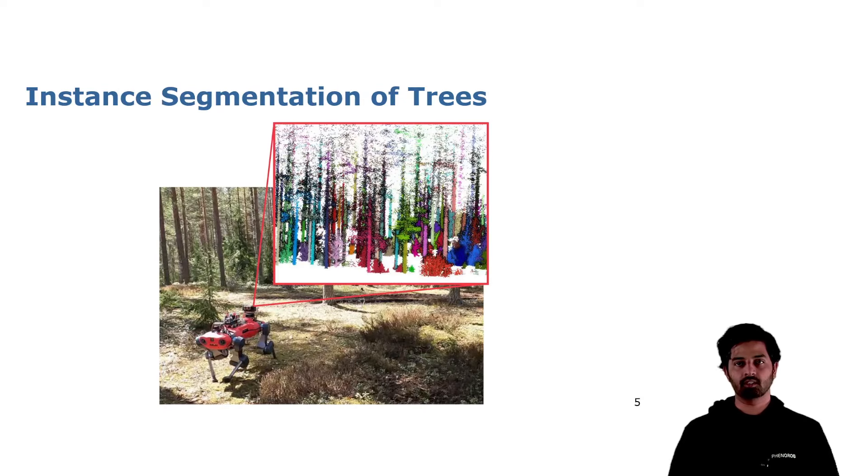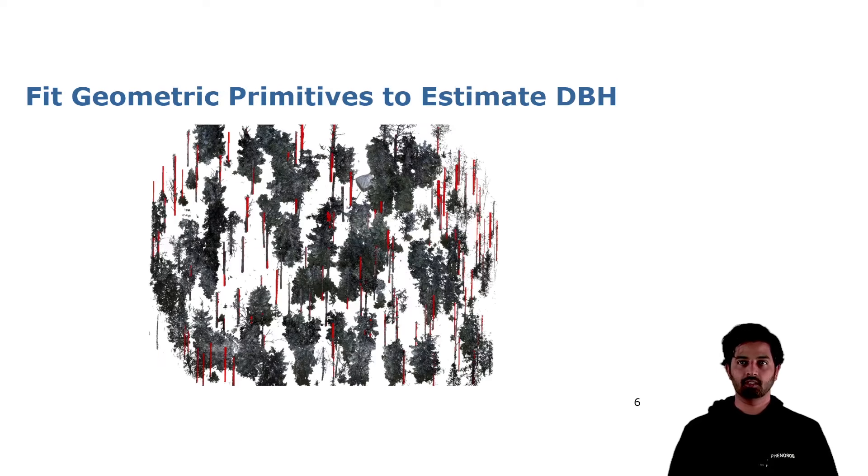The result of our instance segmentation approach is shown here, for example, on data collected from the Velodyne laser scanner equipped on the ANYmal robotic platform. And then once we have such an instance segmentation, we can process each tree instance by instance by fitting geometric primitives to them to estimate the DBH that we are interested in.